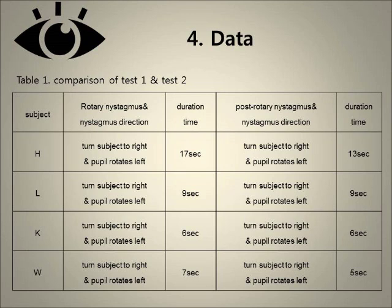When the subjects were turned right, the pupil rotated left. Duration time varied. Rotary Nystagmus and Post-Rotary Nystagmus times were: Han, 17 seconds to 13 seconds; Lee, 9 seconds to 9 seconds; Kim, 6 seconds to 6 seconds; Wu, 7 seconds to 5 seconds.